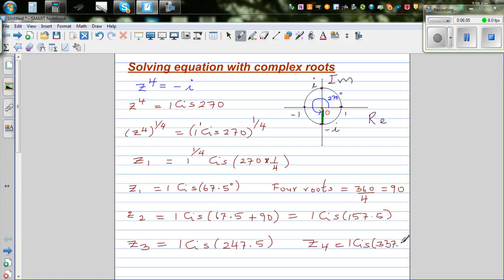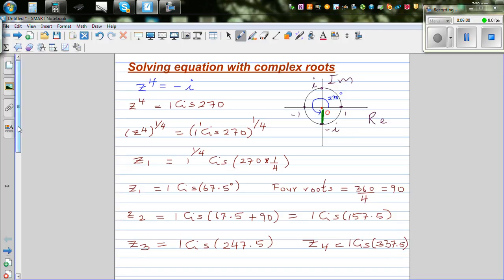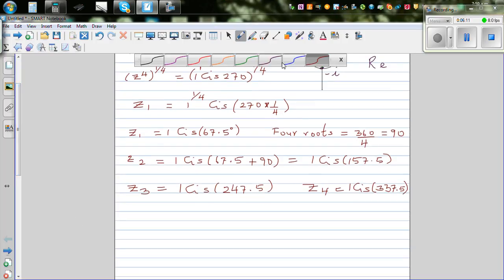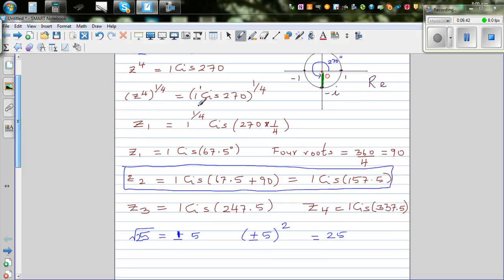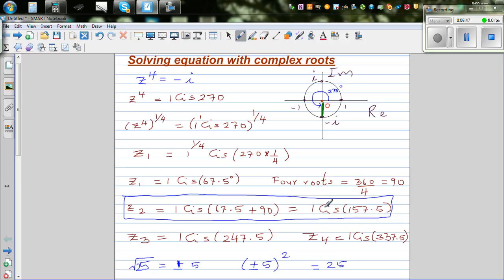So now to confirm your answer, let me confirm one answer - you can do the rest yourself. If you want to confirm this answer, let me explain before that. If you know that square root of 25 is plus or minus 5, why? Because if you square plus or minus 5, you get 25. So basically what have we done? We have found the fourth root of negative i. Fourth root of negative i are these values.